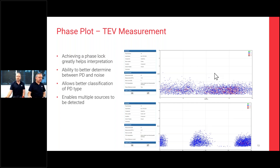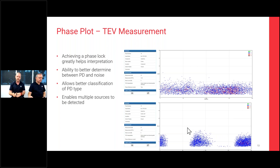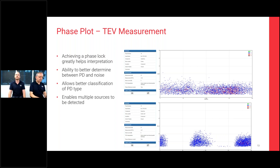Having a good phase lock gives you the ability to better distinguish between PD and noise, and then classify it. It also enables multiple sources to be detected — you can see single-phase, two-phase, or three-phase activity, and different types of PD occurring simultaneously. Pattern recognition techniques won't work if you don't have good phase plots to analyze.